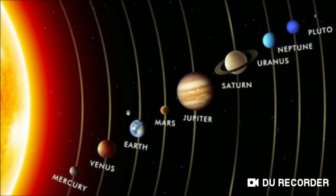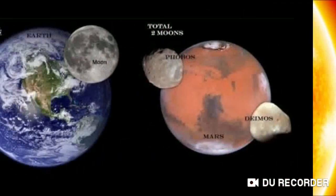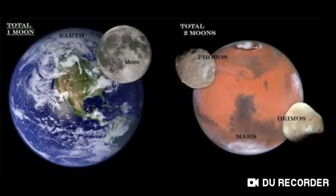About other heavenly bodies — satellites: some heavenly bodies revolve around planets; they are called satellites. For example, the Moon revolves around the Earth, hence it is called a satellite of the Earth.